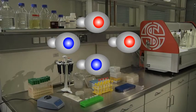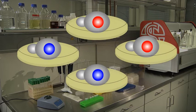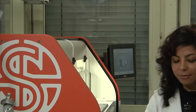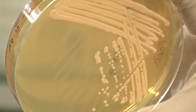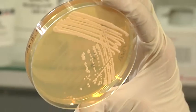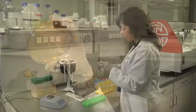In the lab, the haploid spore products can be individually isolated and analyzed. The ability to separate and grow all four meiotic products makes genetic analysis with yeast particularly simple. The selected diploids are transferred to a sporulation plate with low nutrient content. After seven to ten days, the diploids sporulate.